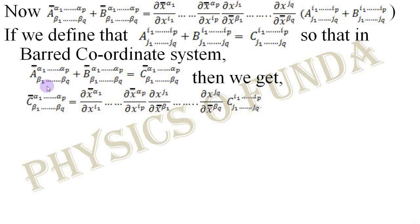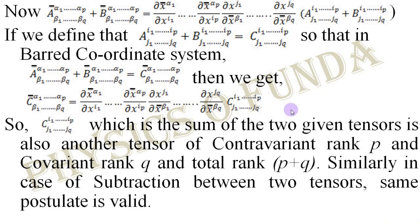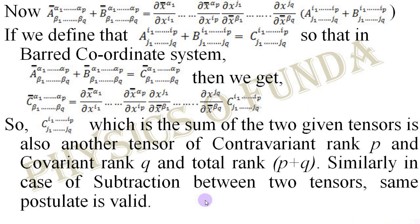Considering these facts, we can rewrite the equation such that the left-hand side is replaced by the summation tensor C in the barred coordinate system, the differential portion remains unchanged, and the right-hand side term within parentheses is replaced by tensor C in the unbarred coordinate system. If we notice this transformation equation, we can clearly say that this is a transformation equation of a mixed tensor of rank P plus Q, in which the contravariant rank is P and the covariant rank is Q. So the tensor C, which is the summation of the two given tensors A and B, is a mixed tensor of rank P plus Q with contravariant rank P and covariant rank Q, the same as the individual tensors. The postulate is proved. If we take subtraction between two tensors, then we get the same kind of result.